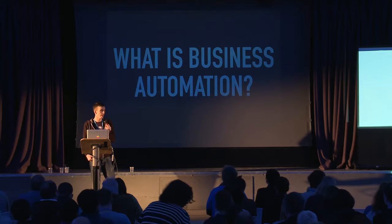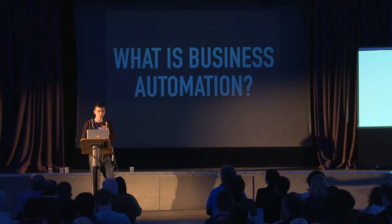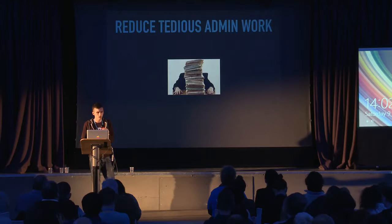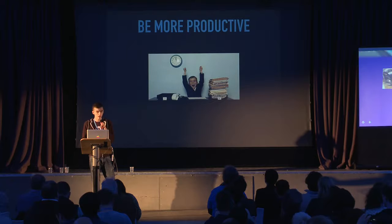So what is business automation? It kind of is what it sounds like. It refers to the strategy of automating various processes within your business. This is done to save costs — meaning to reduce the amount of time that you have to spend on said process. This is usually done using APIs, so we can connect two applications together, and one application responds to the action of another. With good business automation, you can reduce the amount of tedious admin work you have to do, as well as being more productive.